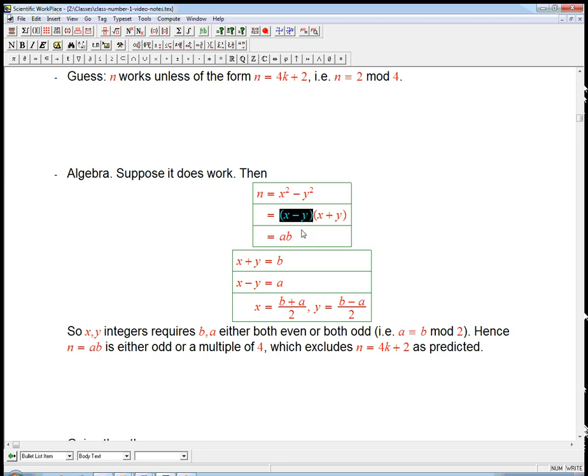So I'm just going to call x - y = A and x + y = B. Let's solve those for x and y in terms of A and B. That's pretty easy to do.